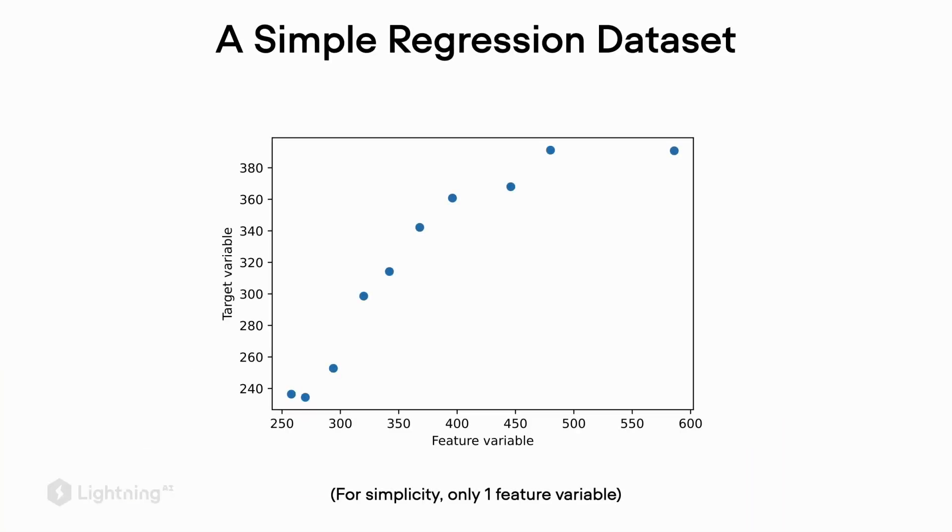We can, and in this video I want to give you a brief outline of how it works conceptually. So suppose we have a simple regression dataset as shown here, where we have the feature values on the x-axis and the target values on the y-axis.